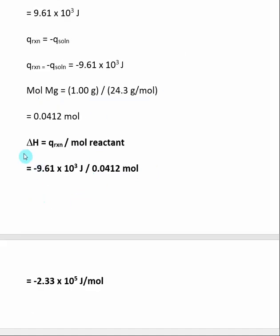We use the equation that the enthalpy of reaction equals q reaction divided by mole of reactant. q of reaction we calculated by finding the q of solution. Mole of reactant we were able to calculate because we knew how many grams of magnesium and what the atomic weight of magnesium was.